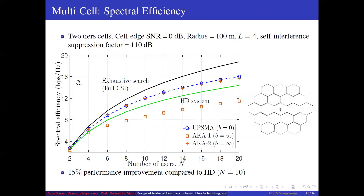Here we have plotted sum spectral efficiency versus number of users in the cell. We compare the proposed algorithm to two algorithms available in literature, AK1 and AK2, considering a special case called index-only feedback, where users feed back only the indices of interfering users but not channel gains. The proposed user pair scheduling and mode selection algorithm gives better spectral efficiency compared to AK1, AK2, and also compared to the half duplex system.